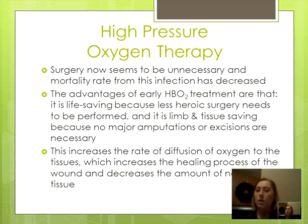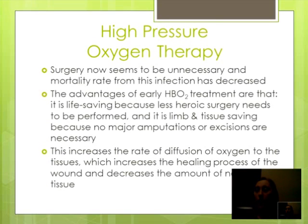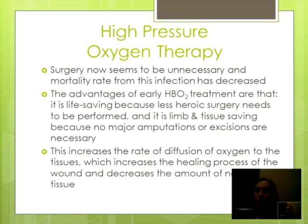High pressure oxygen therapy is one intervention that can be used on gas gangrene. With the use of high pressure oxygen therapy, surgery now seems to be unnecessary and the mortality rate from this infection has decreased. The advantages of high pressure oxygen therapy treatment are that it is life saving because there is less heroic surgery needed, and it is limb and tissue saving because no major amputations or excisions should be done. High pressure oxygen therapy increases the rate of diffusion of oxygen to the tissues, which increases the healing process of the wound and decreases the amount of necrotic tissue in the area.